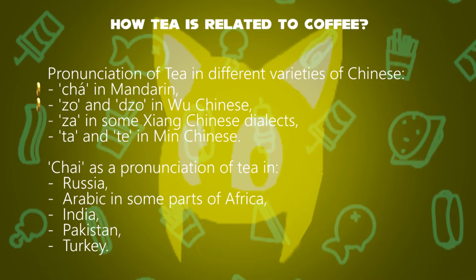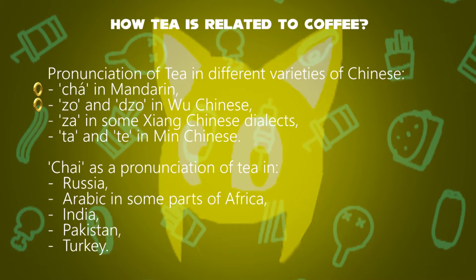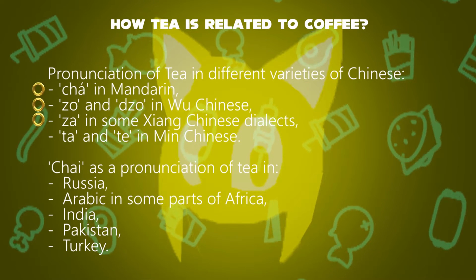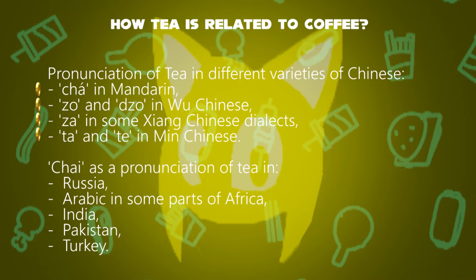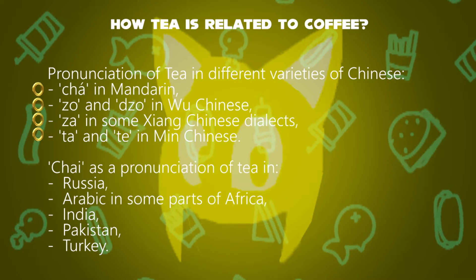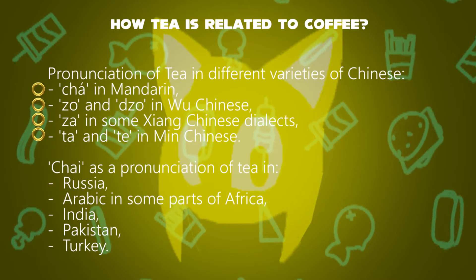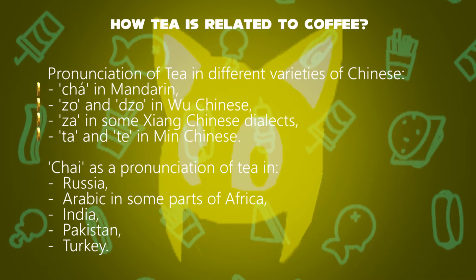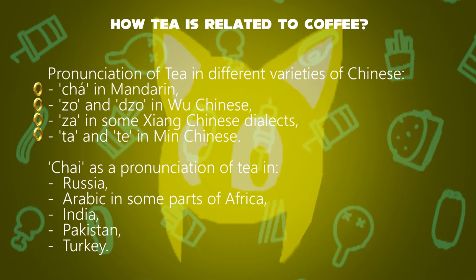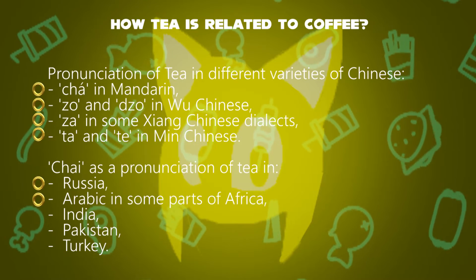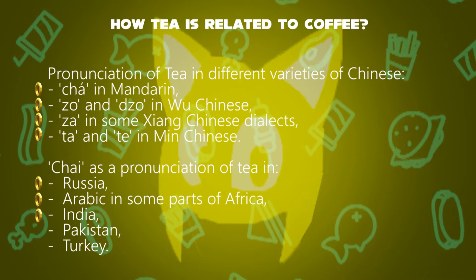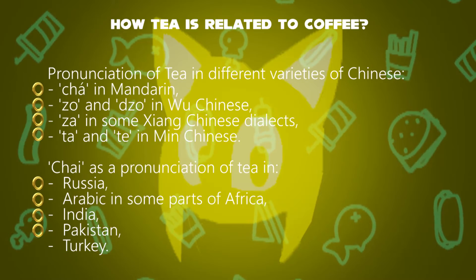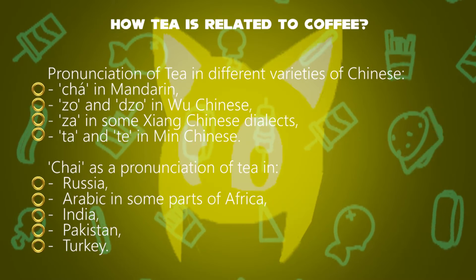Other pronunciations include 'zia' in some Xiang Chinese dialects, and 'ta' and 'te' in Min Chinese. Elsewhere, it is known as 'chai' in Russian, Arabic, and in some parts of Africa, India, Pakistan, and Turkey.